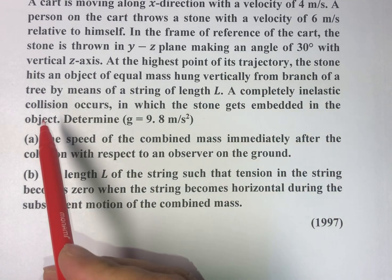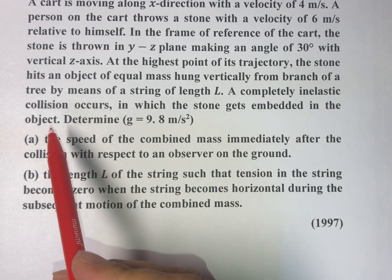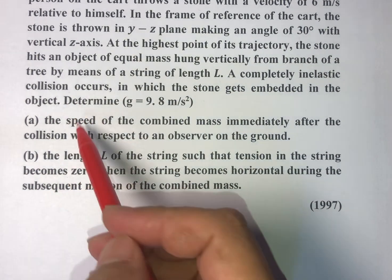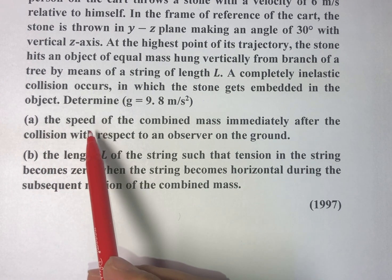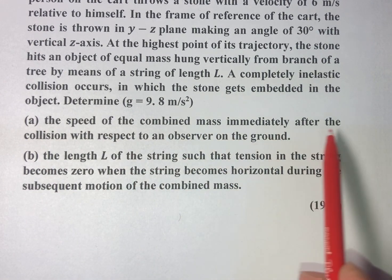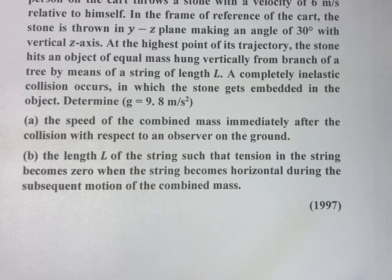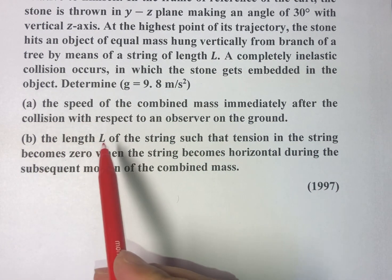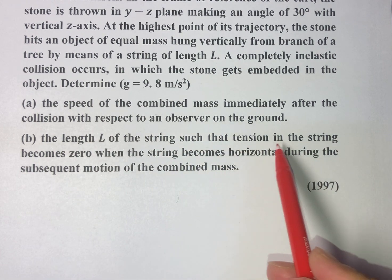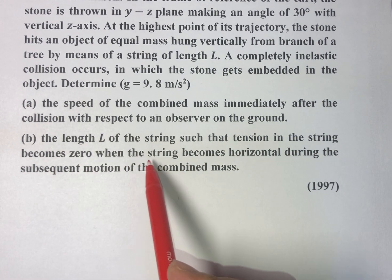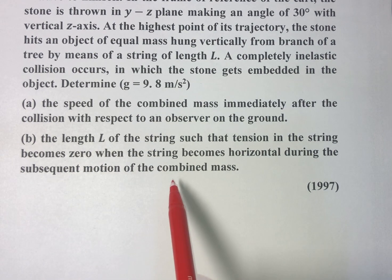A completely inelastic collision occurs in which the stone gets embedded in the object. We have to find two things: Part A, the speed of the combined mass immediately after the collision with respect to an observer on the ground. And Part B, the length L of the string such that tension in the string becomes zero when the string becomes horizontal during the subsequent motion of the combined mass.